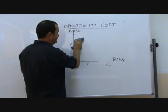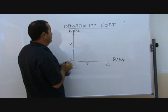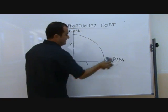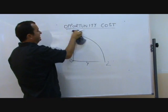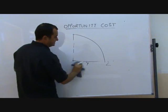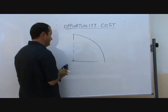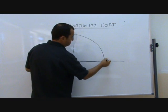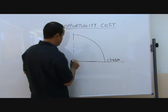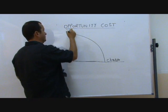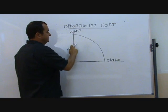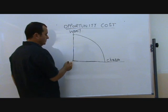So in reality, the curve might be like this. Let's move away from the idea of a student now and consider a country—a country that can produce either cheese or wool.